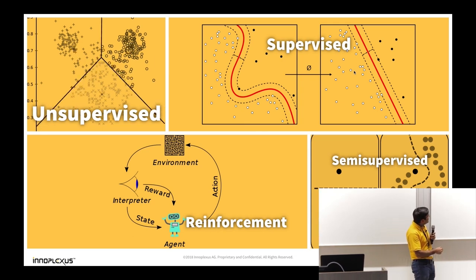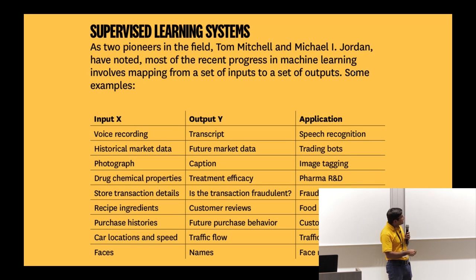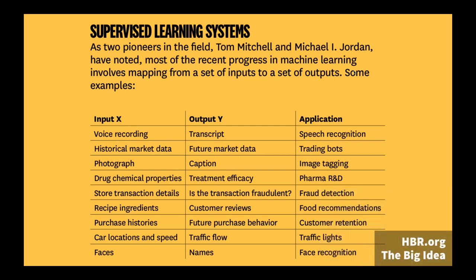This table represents input-output pairs, and almost all the AI applications you have read about in the last couple of years — speech recognition, chatbots, image tagging, pharma R&D, fraud detection — all of it is nothing more than giving an input and getting an output. Input-output pairs: that is what more or less sums up supervised learning systems.